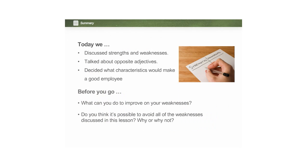Alright ladies and gents, that's the end of today's lesson. Today we discussed strengths and weaknesses. We talked about opposite adjectives and we decided what characteristics would make a good employee. Before you go, here are two questions to end off today's lesson. The first is: what can you do to improve on your weaknesses? And the second is: do you think it's possible to avoid all of the weaknesses discussed in this lesson? Why or why not? You may answer either or both of those questions.